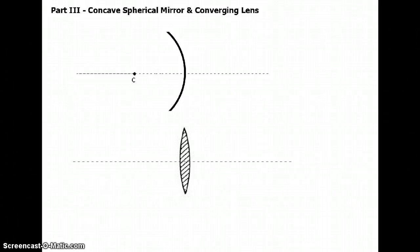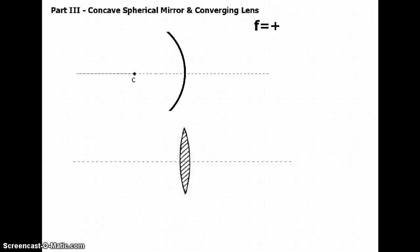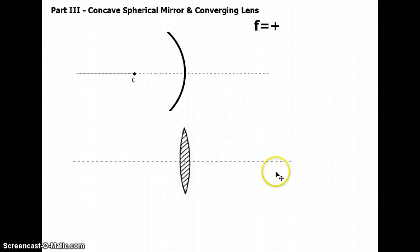This is part three: the concave spherical mirror and the converging lens. These are cousins again. What makes them the same is that their focal lengths are both positive. This is the most complicated case of all, but hopefully our previous experience can help us understand this quickly using all the knowledge we've accumulated so far. The mirror and the lens kind of do the same thing.